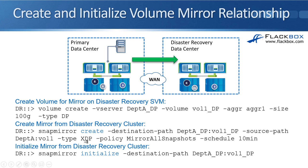We then say type is XDP for extended data protection. Specify the policy that you want to use — you can either use one of the system policies as we are here with Mirror All Snapshots, or you can use your own custom policy. Custom policies are most often used for SnapVault, so we'll go into custom policies when we get to the SnapVault lectures. Finally specify the schedule — how often you want to replicate the data. That creates the relationship between the source and the destination volume but it doesn't actually move any data yet.